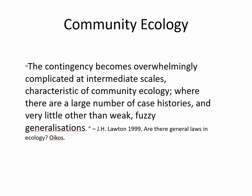Here's a quote from a paper by Lawton in 1999 — 'Are there general laws in community ecology?' He says: 'The contingency becomes overwhelmingly complicated at intermediate scales characteristic of community ecology, where there are a large number of case histories and very little other than weak, fuzzy generalizations.' I think that's a fair state of community ecology generally — he was talking about any kind of multi-organism interaction.